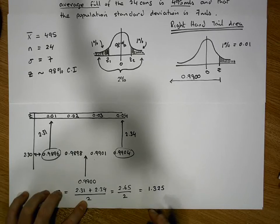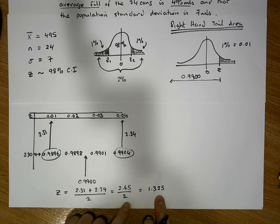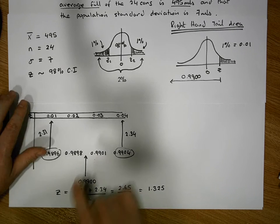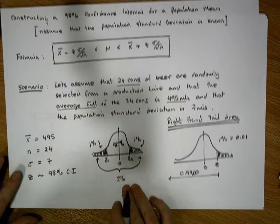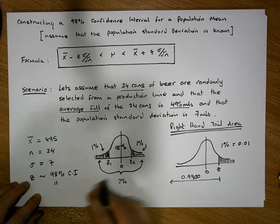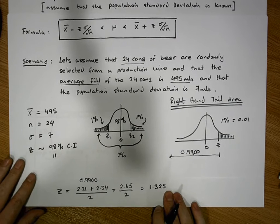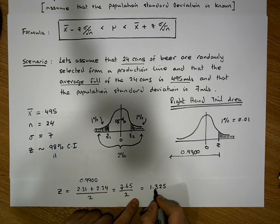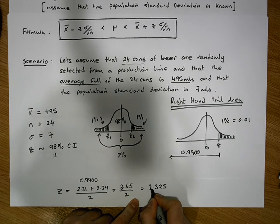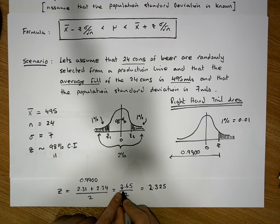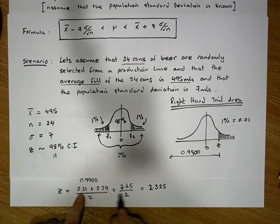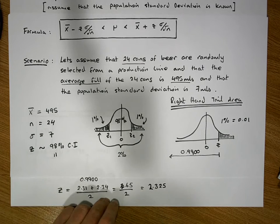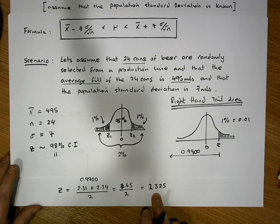The z-score of 1.325 is halfway between 2.31 and 2.34. Actually, 2.31 plus 2.34 is 4.65, so this value is 2.325 and not 2.65. Let me rewrite that: 2.31 plus 2.34 is 4.65, so the z-score that we require is 2.325.